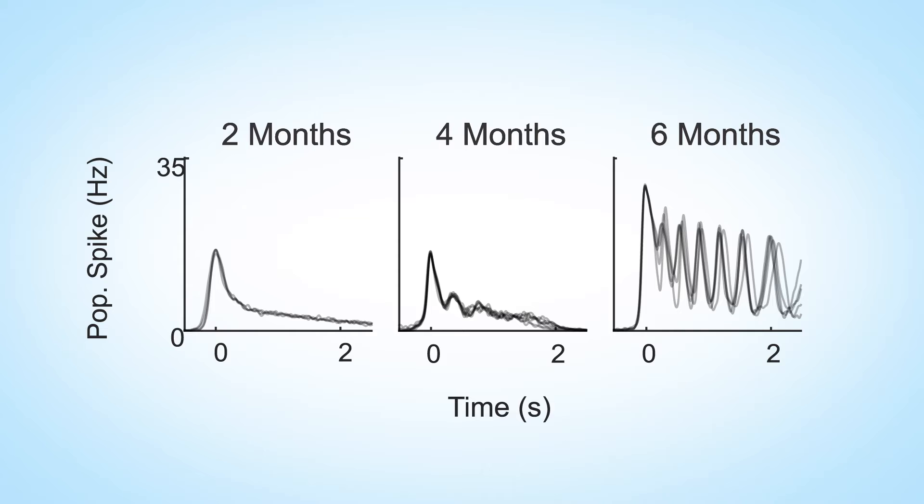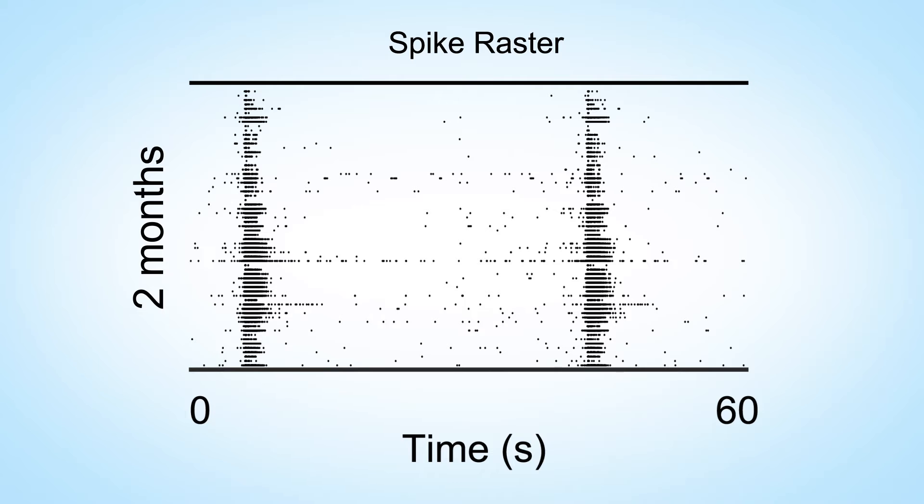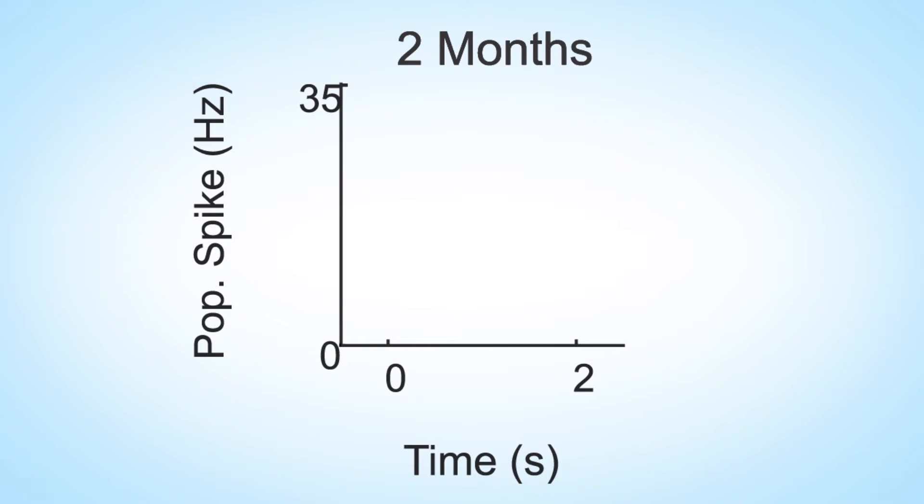What you're seeing in these traces are the total number of neurons that are firing at that time. A higher peak means more neurons or more action potentials are emitted. At six weeks, the neurons don't really synchronize. They fire sparsely and randomly. Starting at two months, they start to synchronize in these burst events. They have these periods where all the neurons in the network activate at the same time. Starting at four months, they spike really quickly once, and then they spike again within a couple hundred milliseconds. That's what we call an oscillation.